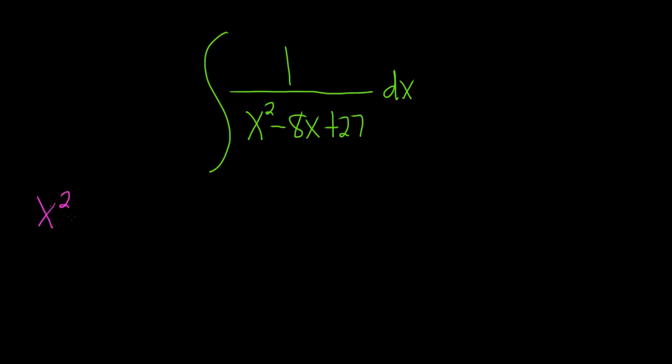So x squared minus 8x, and then plus 27. This is equal to x squared minus 8x. Now what we do to complete the square is we take the coefficient of x, which is negative 8. We divide it by 2 and we square it. So negative 8 over 2 is 4, 4 squared is 16. Typically you do it in your head, but I'll show the work here.